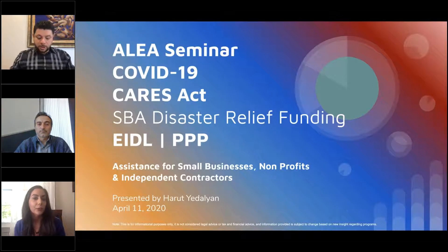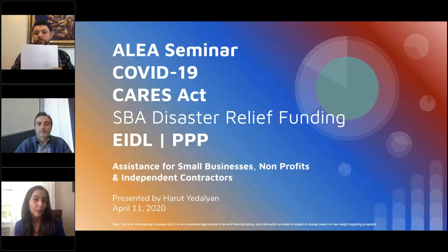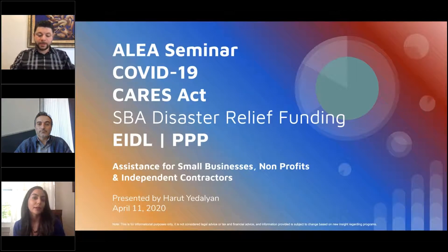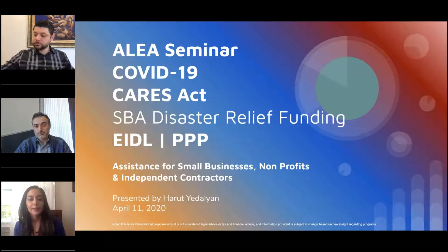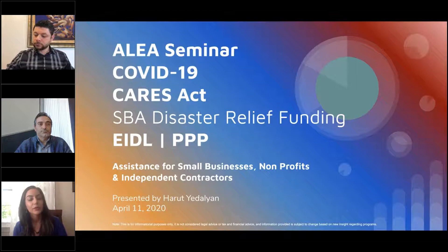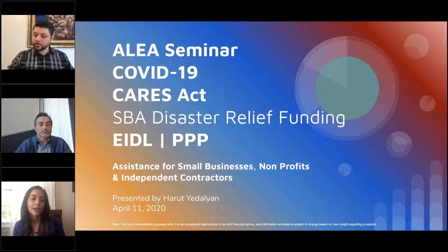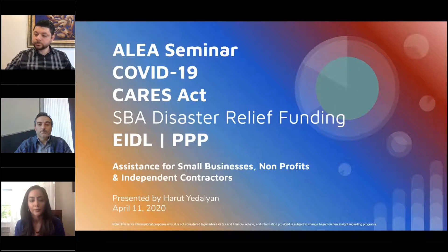We've identified three of the top and most relevant programs that we will be discussing today — the ones that have provided the most confusion for most people. We'll be discussing the Small Business Debt Relief, the PPP (also known as the Paycheck Protection Program), and the EIDL, which is the Economic Injury Disaster Loan.